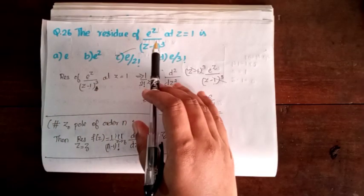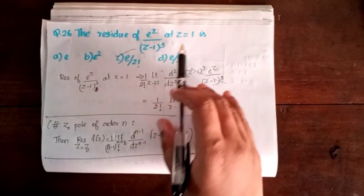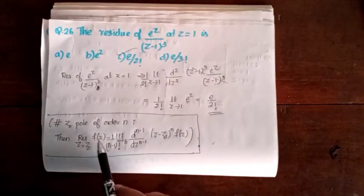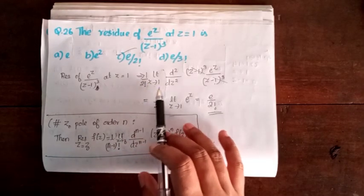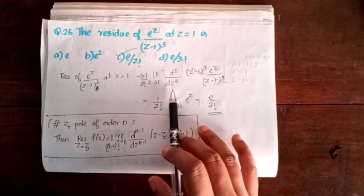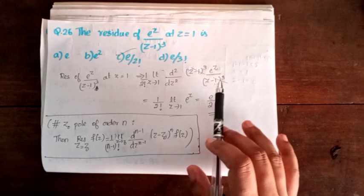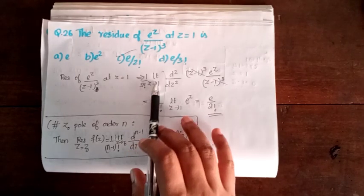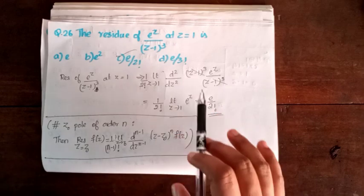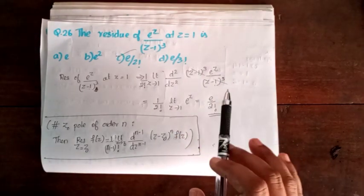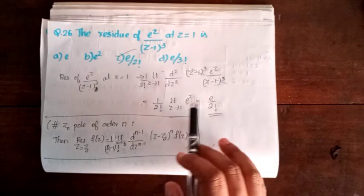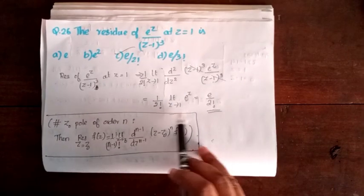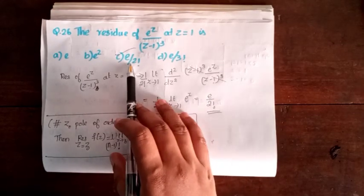Question 26. The residue of e^z/(z minus 1)³ at z equal to 1. Using the residue formula: Res = (1/2!)·lim(z→1) d²/dz² of e^z equal to (1/2)·e^1 equal to e/2. Option C is correct.